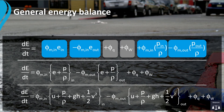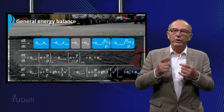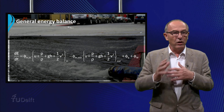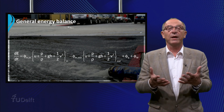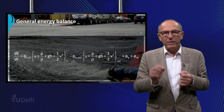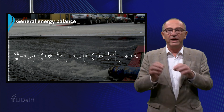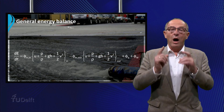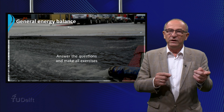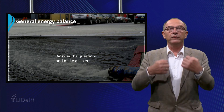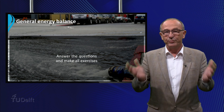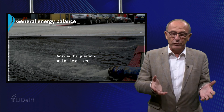We have to realize that in this example of the vessel we assume that no heat is lost to the surroundings and that no heat effects occur as a result of chemical reactions. It is now important that you make yourself more familiar with all these terms and their meanings — answer the questions and make all the exercises. In the next video we will give examples of how this total energy balance of an open system can be used to solve different types of problems. Thanks for your attention!